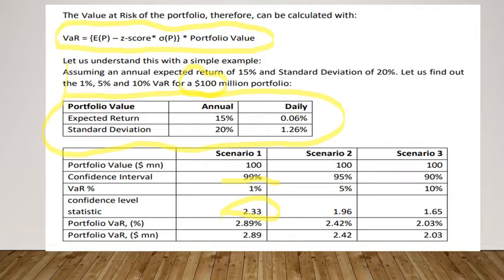So from the 100 million portfolio, we are calculating a loss equivalent to 2.89. Similarly, when you work at a 95% confidence level, all other variables remain the same but the confidence level statistic changes to 1.96, giving a different answer. At the 90% confidence level, this variable becomes 1.65. We need to remember these statistics.